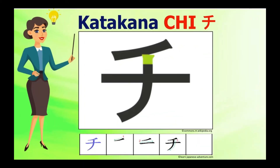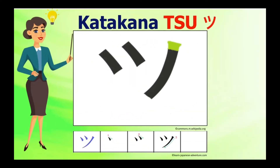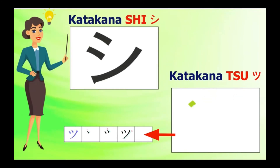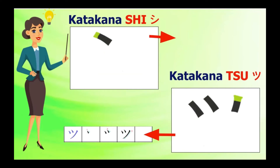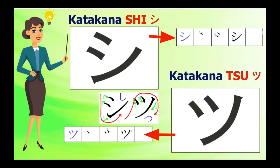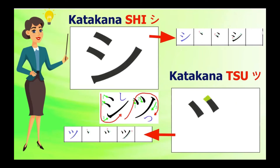Katakana Chi consists of three stroke orders. Katakana Tsu looks like katakana Chi; however, there are slight differences. The first and second strokes of katakana Chi are slanted but almost horizontal, while in Tsu the first and second strokes are almost vertical. For Chi, the third stroke starts at the bottom going upward, while for katakana Tsu the third stroke starts from the top going downward.